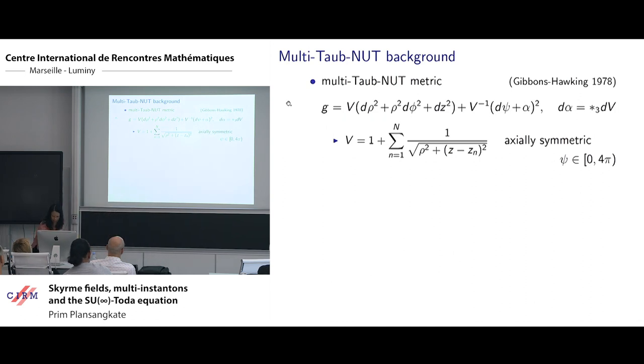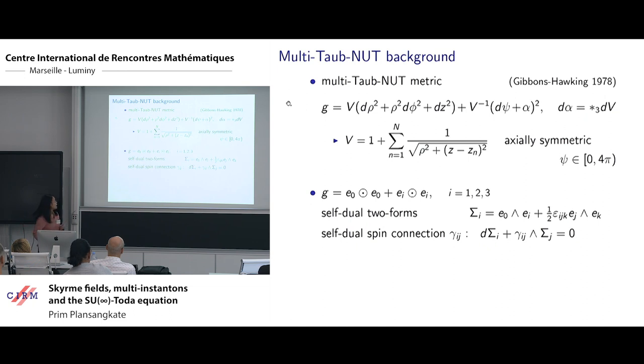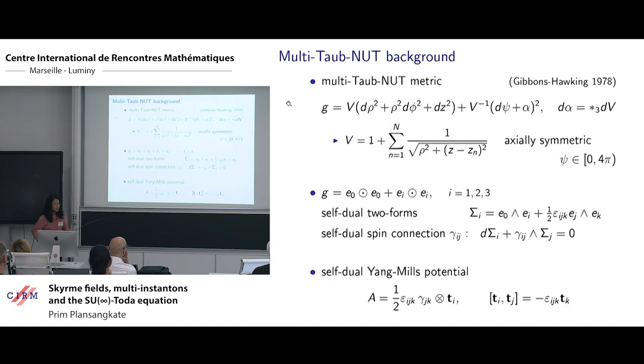With this metric, then we can calculate the self-dual spin connection of this metric by writing the metric in orthonormal tetrad and then computing the self-dual two forms. Then the self-dual spin connection can be obtained from this equation here. The Yang-Mills potential is given in terms of the self-dual spin connection coefficients.